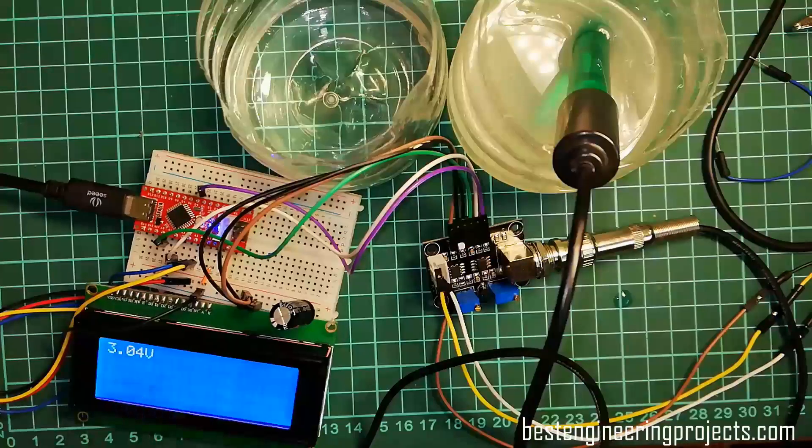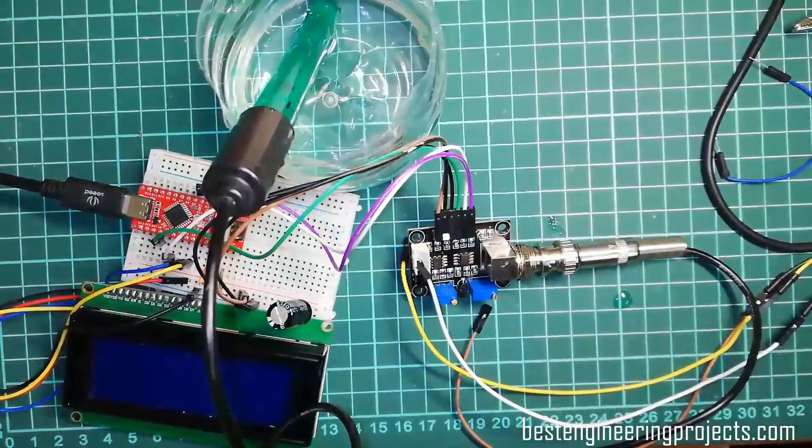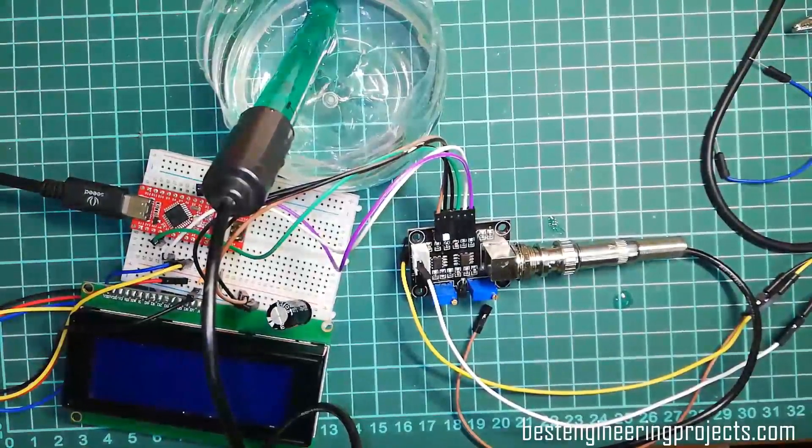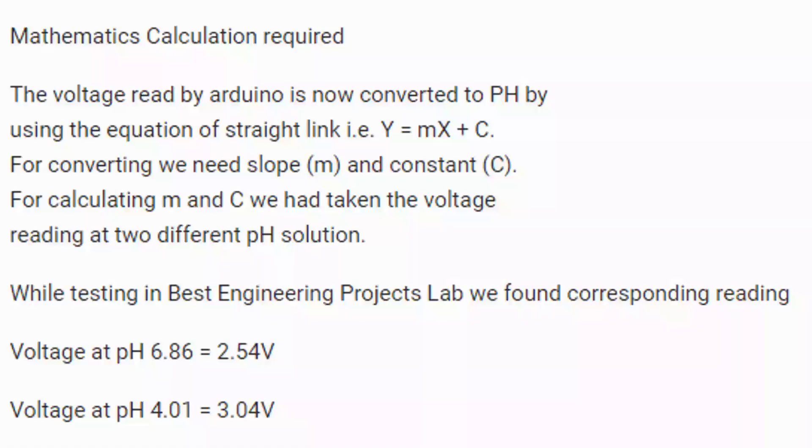You have to note one thing before. Now, the voltage read by Arduino is converted to pH by using the equation of a straight line, that is y equals mx plus c. For converting, we need slope m and constant c. For calculating m and c, we have taken the voltage reading at two different pH solutions: pH 6.86 buffer solution of phosphate, and pH 4.01 buffer solution of Borax.